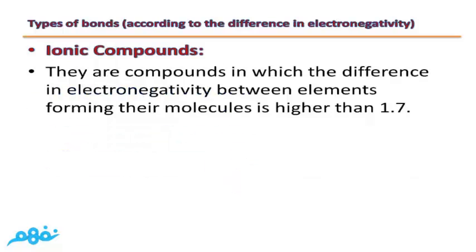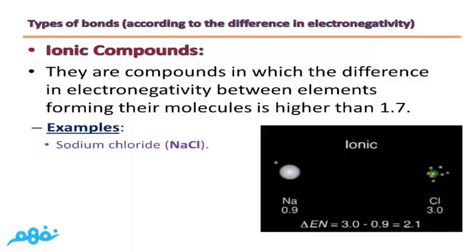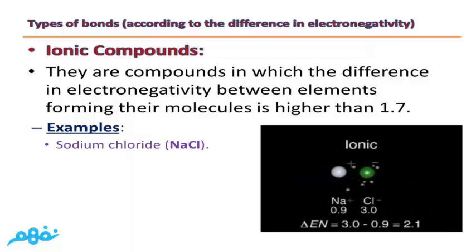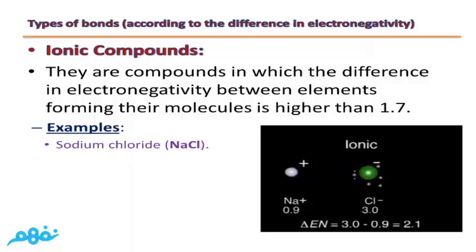Ionic compounds are compounds in which the difference in electronegativity between elements forming their molecules is higher than 1.7. Example: sodium chloride. The difference between sodium and chlorine is 3 minus 0.9, which equals 2.1. Since 2.1 is more than 1.7, the bond between chlorine and sodium is an ionic bond, and sodium chloride is an ionic compound.